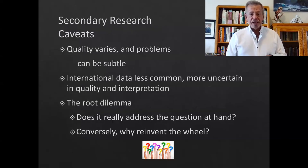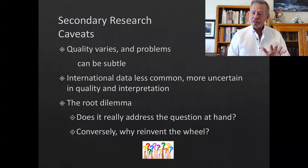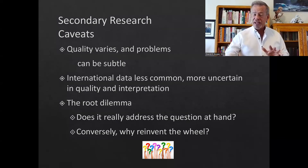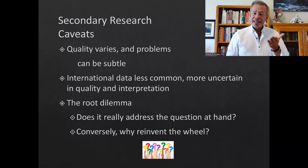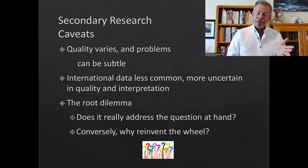The quality of secondary research varies, and problems can be subtle. You may think you have a perfect match between your business and what you're seeing in the secondary data, and it's not so. International data is particularly hard to find accurately, because there are cultural issues — you may not be familiar with how things are done in France regarding fashion, food, or whatever your product may be. The root dilemma is: does this data actually address the question you're looking to answer? Conversely, why reinvent the wheel if the data is already out there? It's both a good thing and a bad thing.